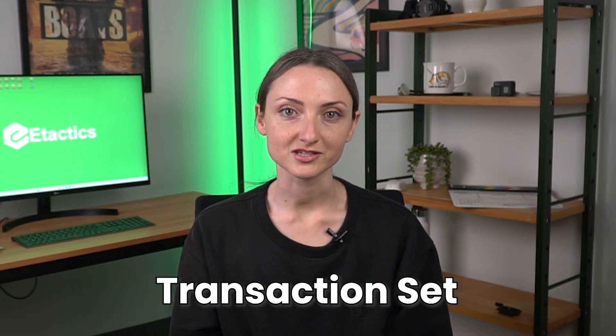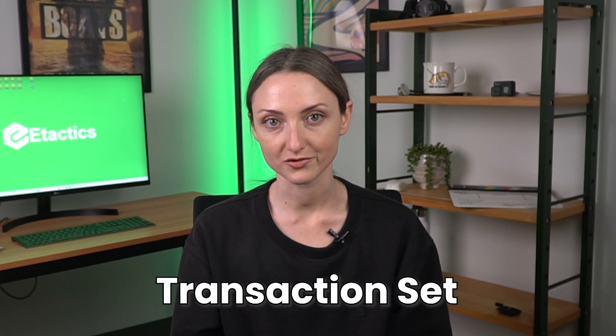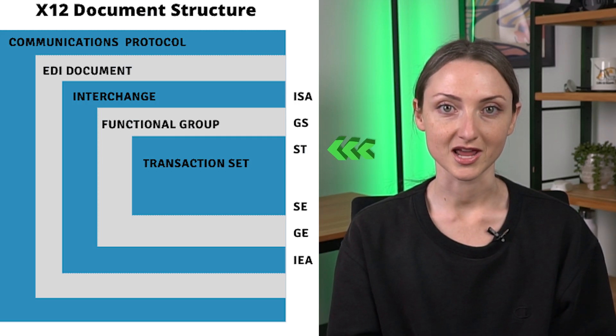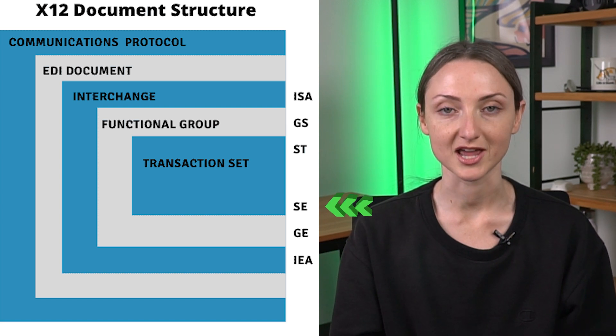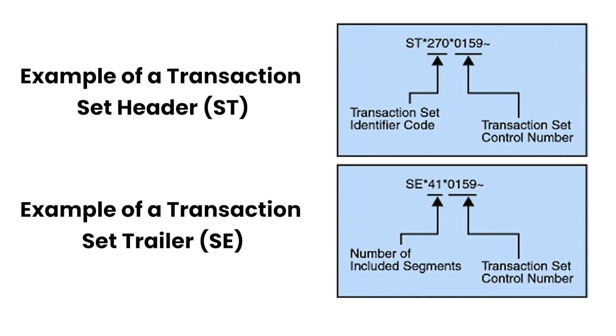Now we're at the heart of the message. The transaction set is a complete business document, like an invoice or a claim. Each transaction set starts with an ST segment and ends with an SE segment. In between are logically related segments such as customer info, product details, or payment amounts — structured in a very specific sequence so they're easy to interpret and process electronically.